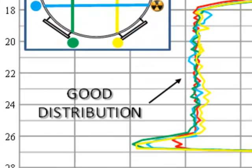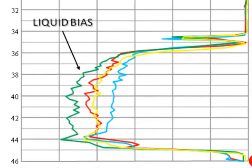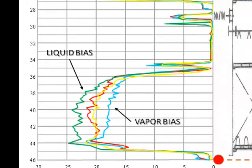So, the upper packed bed showed good distribution, but the lower bed showed poor distribution, with a liquid bias on the green scan and a vapor bias on the blue one.